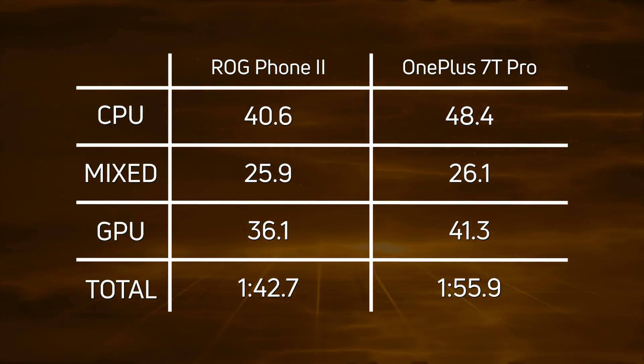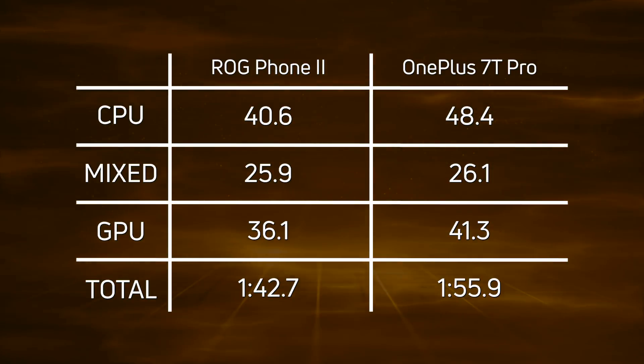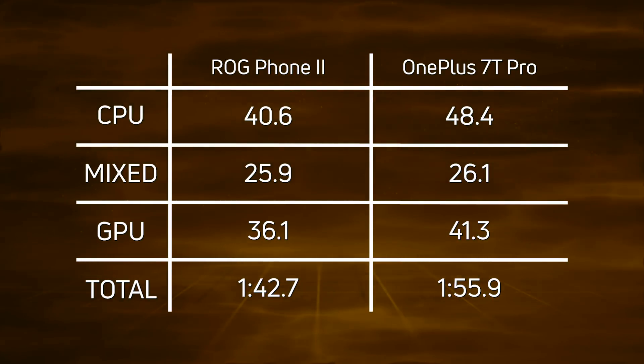Adding up all those wins across all three categories, the Asus won with 1 minute 42.7. My name is Gary Sims, this is SpeedTest G. I really hope you enjoyed this video — if you did, please consider giving it a thumbs up, and why not stick around by subscribing to the channel. That's it, I will see you in the next one.